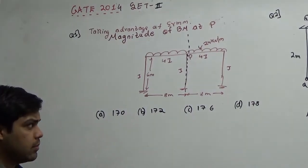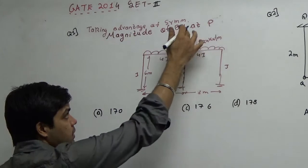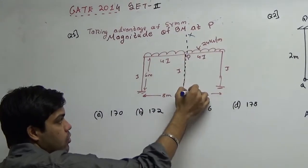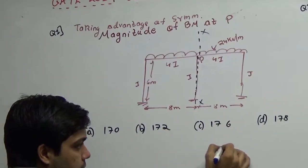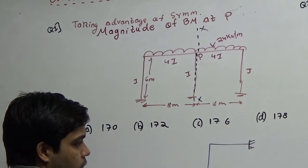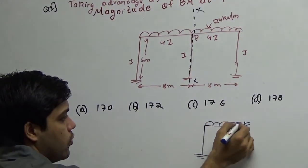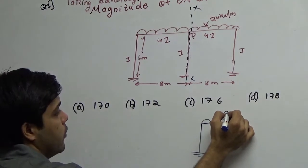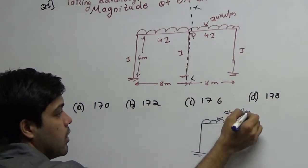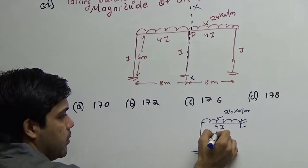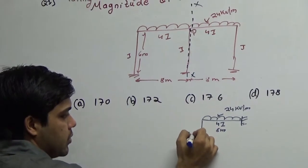Here I am going to tell you about the concept of symmetry. Whenever the axis of symmetry passes through the column you can just take like this - the column on this portion is not required. So you can take like this as 24 kilonewton per meter and 4i, 8 meter, i and 6 meter.